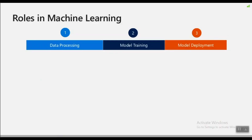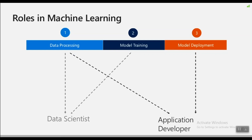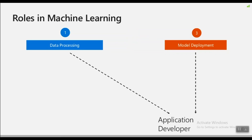What are the different roles in machine learning? We already saw the different stages: data processing, model training, and model deployment — but who actually performs these steps? While data processing and model training is typically the job of a data scientist, model deployment falls to the application developer. Today, we'll be seeing how we can make the lives of an application developer easier using Azure Functions for the data processing and model deployment stages.